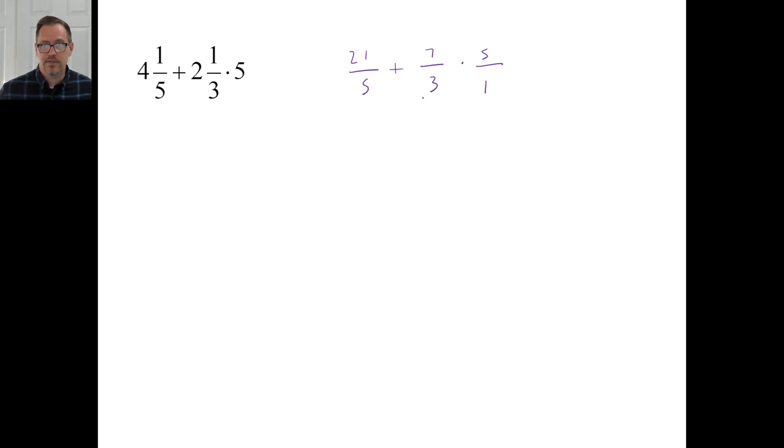This is what we do first. Don't do this plus that first. That's not the right order of operations. So let's go twenty-one fifths again, rewrite it, plus seven times five is thirty-five. Three times one is three. Now we've got a nice common denominator. Obviously it's going to be fifteen here.